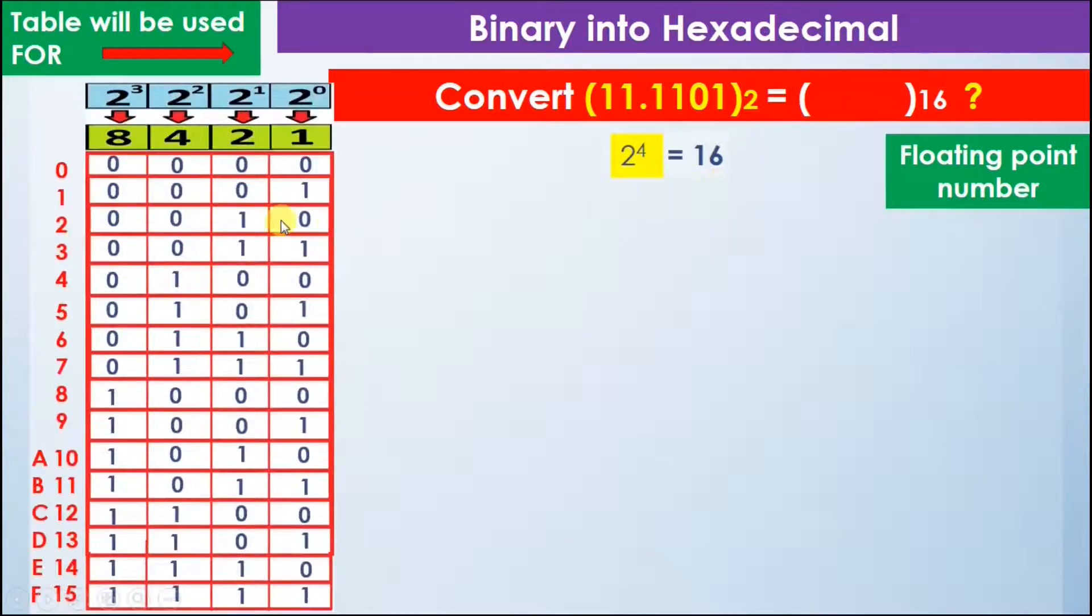Now we write the value here: 11.1101. Remember we will make groups of four bits while moving away from the decimal point.